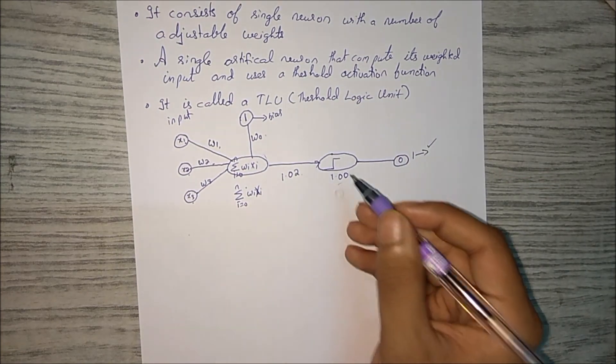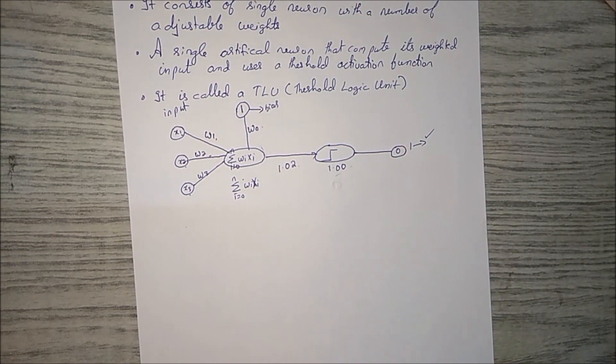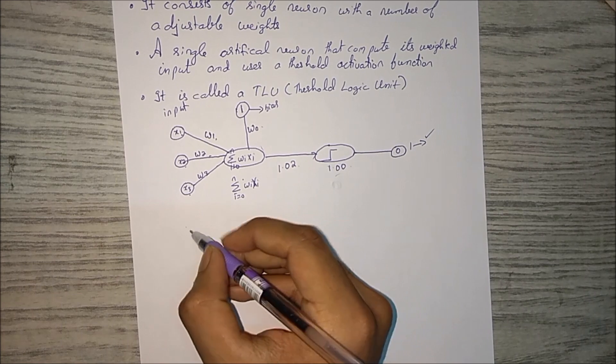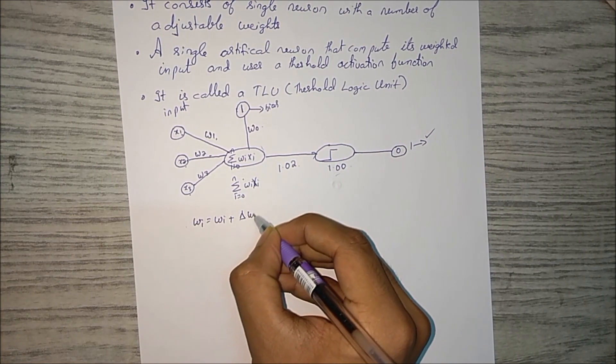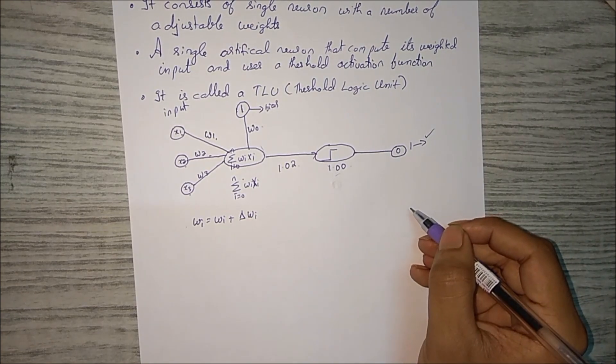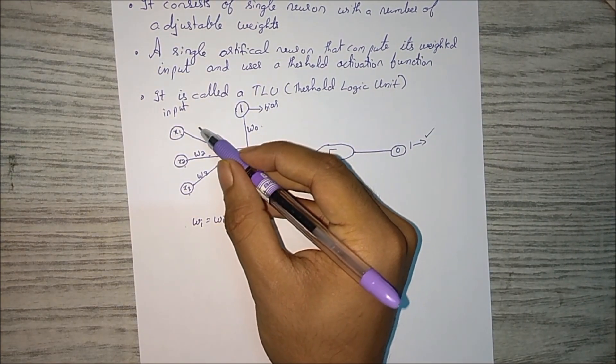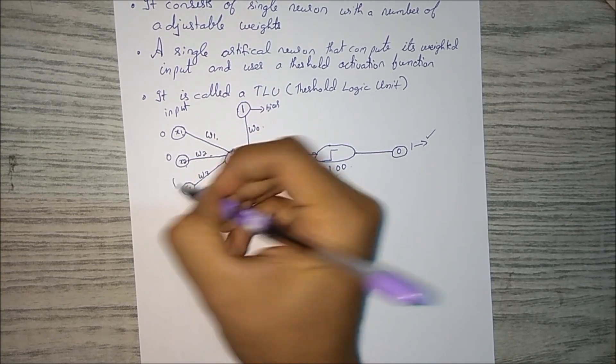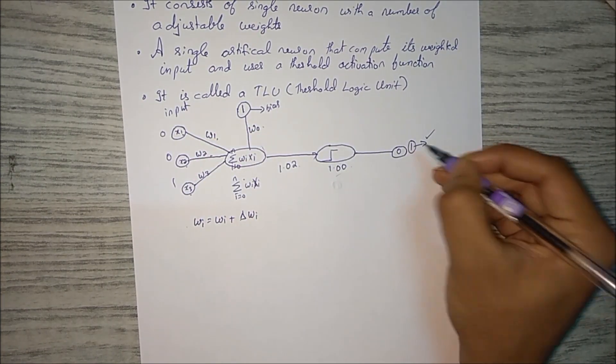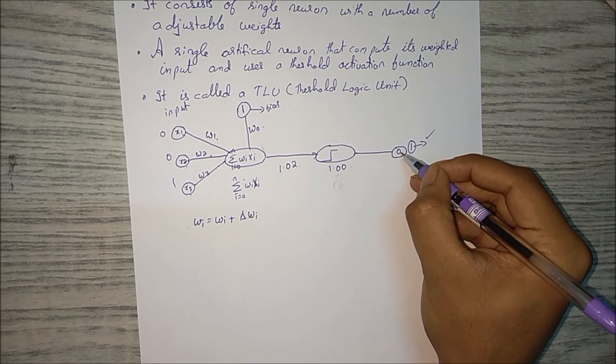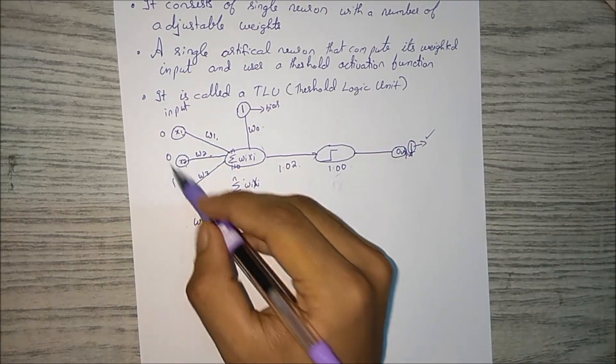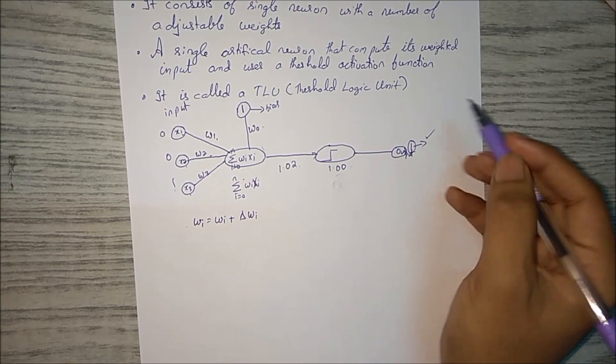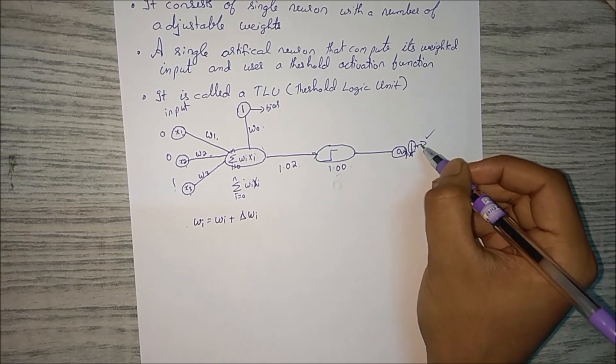So let's see the perceptron's learning rule. It says that wi is equal to wi plus delta wi. That means suppose we gave some input, say 0, 0, 1, and we are expecting an output one in the output. So we are expecting from 0, 0, 1, we are expecting an output one.